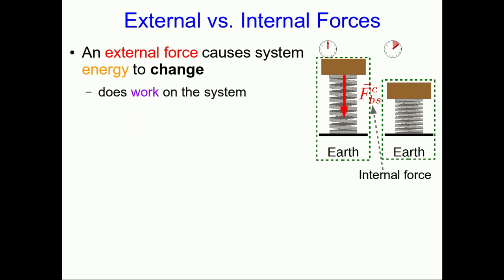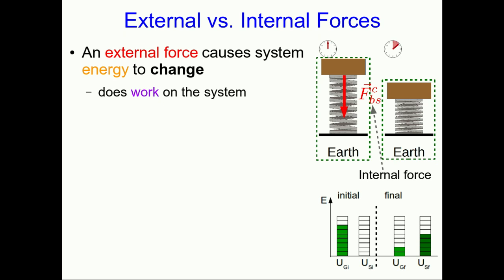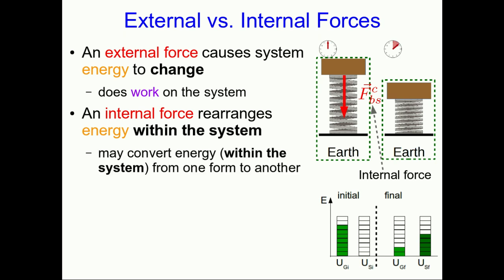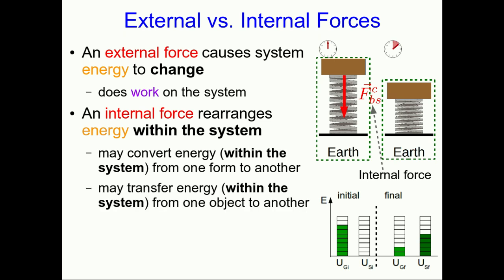But now let's think about what would happen if we had included the earth and the brick in our system. Now that force the brick exerts on the spring is an internal force, and its effect is to convert gravitational potential energy in the system into spring potential energy also in the system. It hasn't changed the system's energy — it's simply rearranged energy within the system. No work has been done because the system energy hasn't changed.